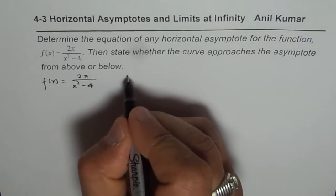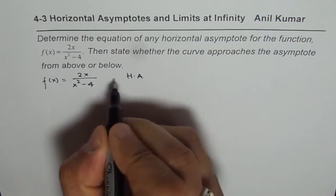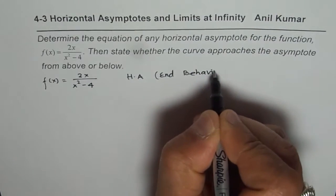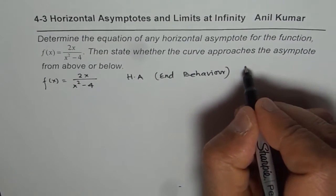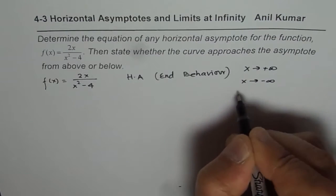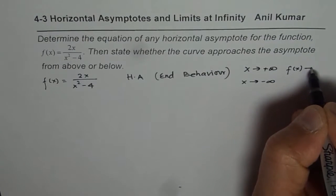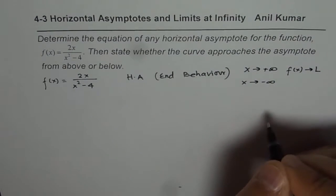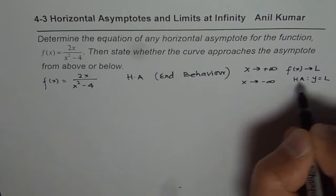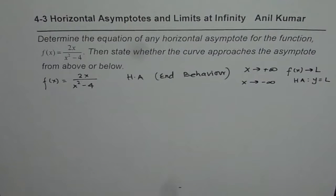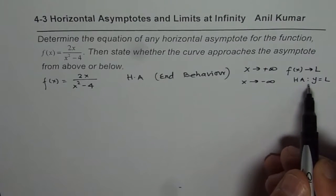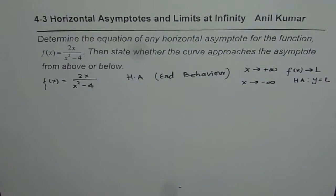To find a horizontal asymptote also means finding end behavior. It really means: if x is approaching positive infinity or negative infinity, and the function is approaching a fixed value L, then the horizontal asymptote will be y = L. Only if the function approaches a fixed value. If the function does not approach a fixed value, then the horizontal asymptote may not exist.